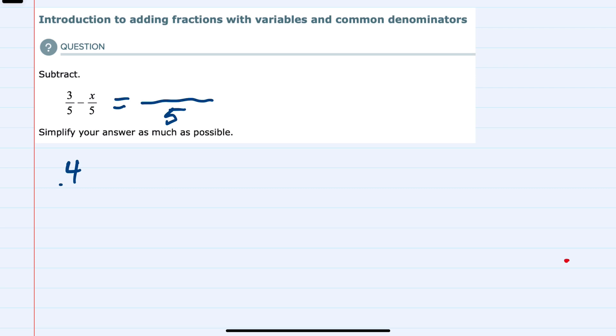So just to give an example with numbers, if we had 4 fifths minus 1 fifth, we would keep the denominator and subtract the numerators. Here 4 minus 1 would be 3. The key point is we are keeping the denominator.